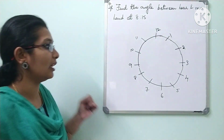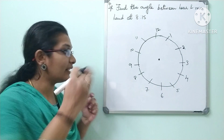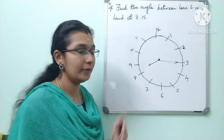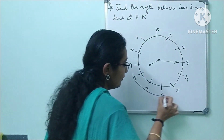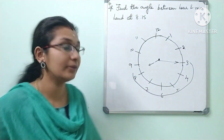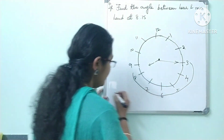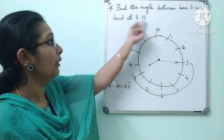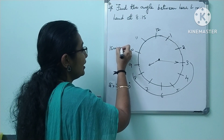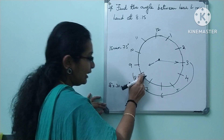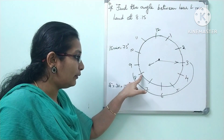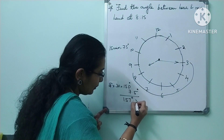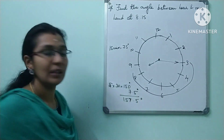Next question: time is 8:15. At 8 o'clock we count 5 complete sectors between the minute hand at 12 and the hour hand: 1, 2, 3, 4, 5 — that is 5 into 30 = 150 degrees. Plus, 15 minutes means the hour hand has moved 7.5 degrees further. So the angle is 150 plus 7.5, which equals 157.5 degrees.